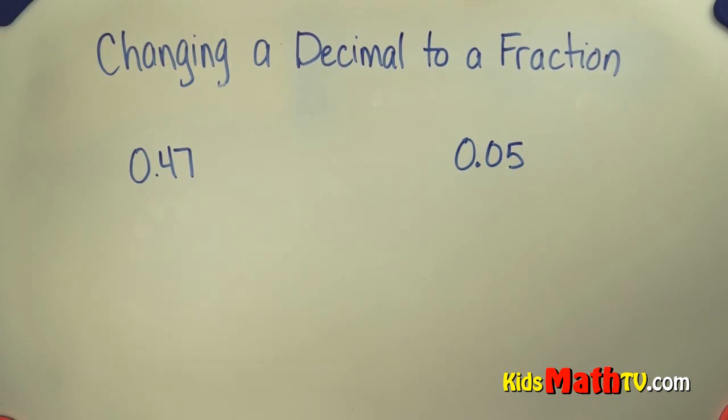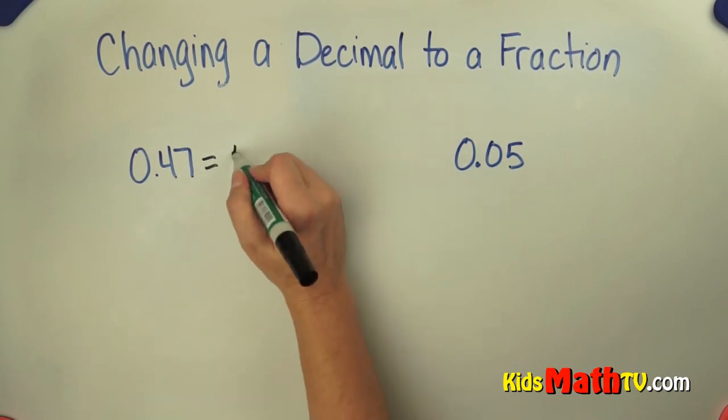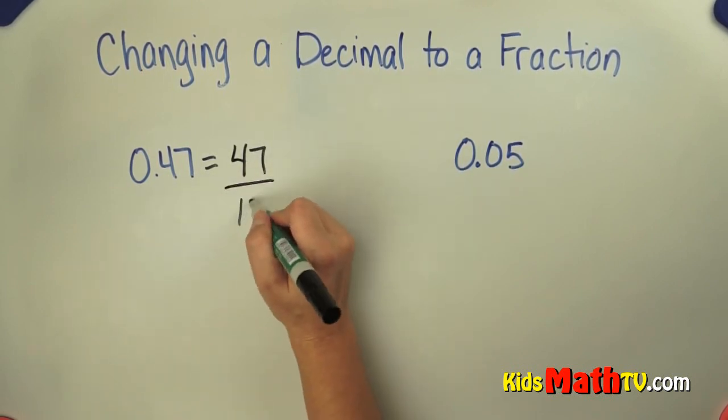When you read a decimal, it sounds the same as a fraction. So 0.47 reads as 47 hundredths, which equals 47 over 100.